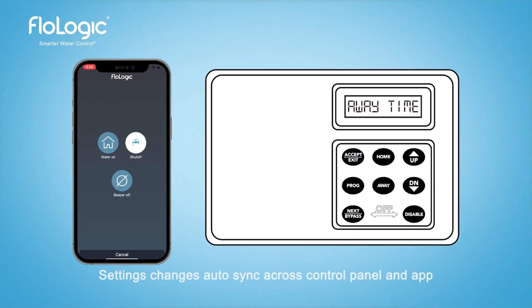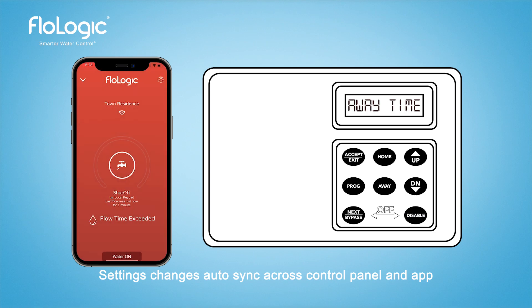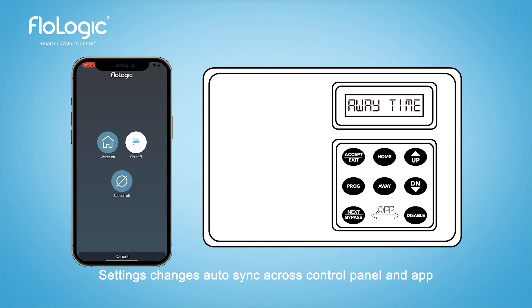When you have an auto shutoff, to silence the alarm, press the disable or silence button. When you're ready to turn the water back on, press the home or water on button.